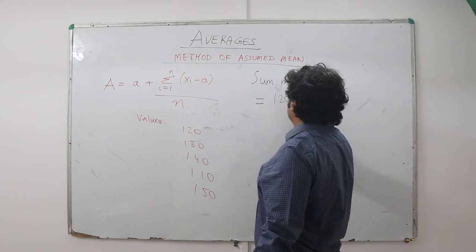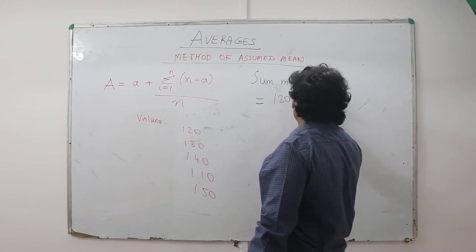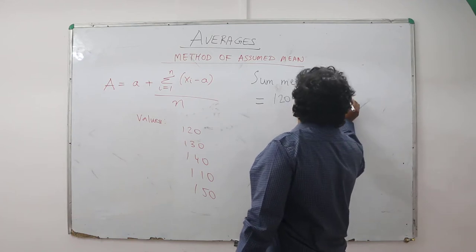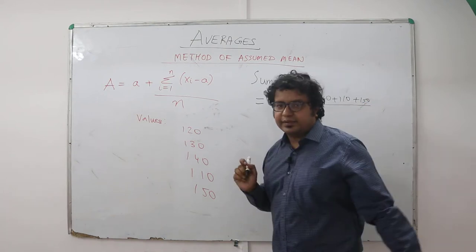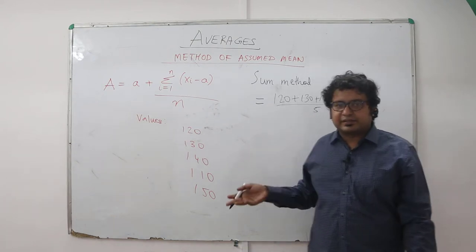What is the sum of values? It's a very simple school method. You add these and divide by the number of values, that is five. There is nothing to explain. I hope this one is clear.